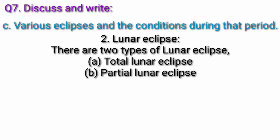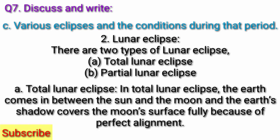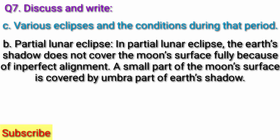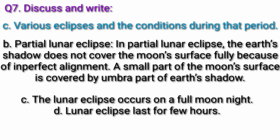B. Lunar eclipse — there are two types: total lunar eclipse and partial lunar eclipse. In a total lunar eclipse, the earth comes in between the sun and the moon, and the earth's shadow covers the moon surface fully because of perfect alignment. In a partial lunar eclipse, the earth's shadow does not cover the moon surface fully because of imperfect alignment — only a small part of the moon surface is covered by the umbra part of the earth's shadow. The lunar eclipse occurs on a full moon night and lasts for a few hours.